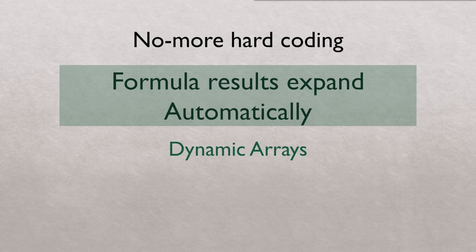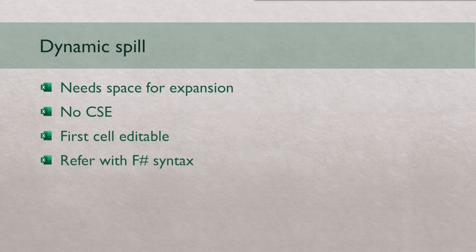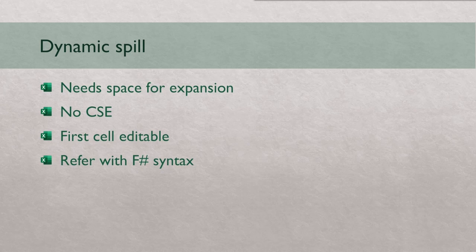This thing of a formula automatically expanding the results is called a dynamic array or a dynamic spill. Earlier, some of you may have used CSE formulas or array formulas. Now what has changed? You don't have to press Control+Shift+Enter. Just press normal Enter and potentially every formula is expandable, and unlike array formulas, you don't have to know what the size of the output is going to be.